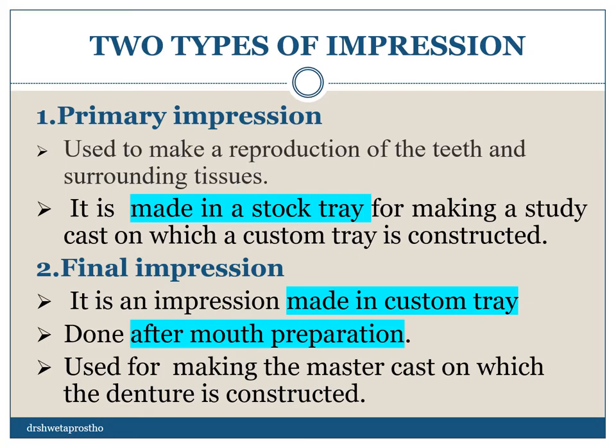Now there is an MCQ which is asked related to the RPD. How many impressions are made in RPD? Two impressions. And how many casts are fabricated for the RPD? Three casts: the primary cast, the final or master cast, and the third is the refractory cast which is done after the block out of the master cast.